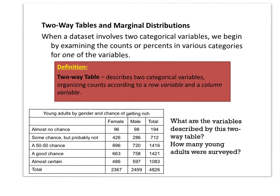Another type of two-way table is one that has many variables. A two-way table describes categorical variables, organized by row variables and column variables. In this case, the column variable is gender — male and female — and the row variables are feelings about whether they're going to be rich or not.